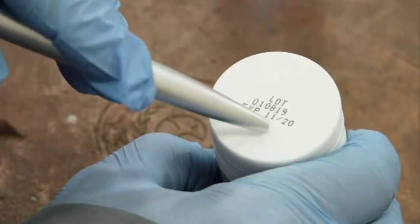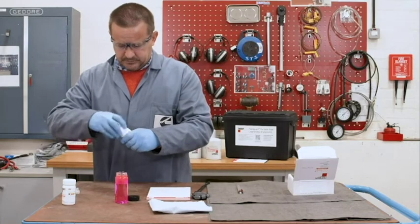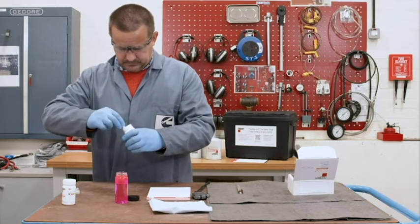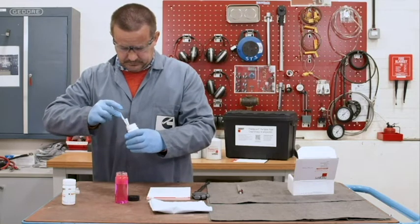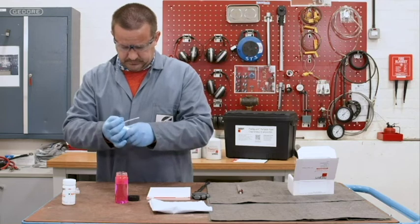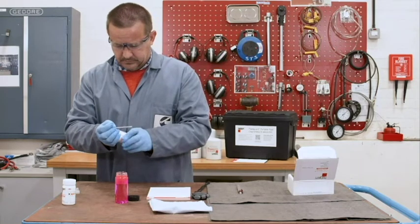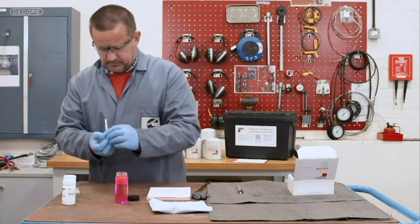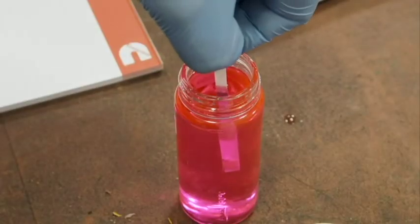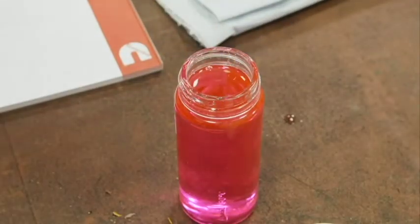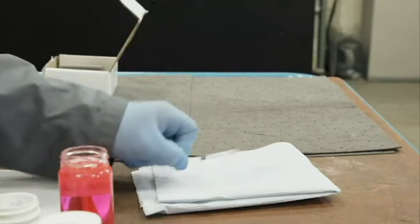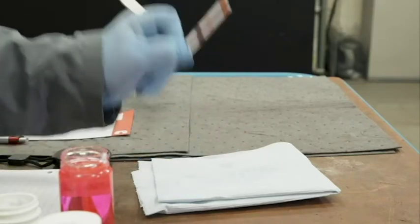First confirm the test strips are in date. Remove an individual test strip from the bottle and close the lid straight away. It's important to avoid touching any of the chemical pads as this could cause interference with the testing. Dip the test strip all the way into the coolant for about three seconds and then shake the test strip horizontally three or four times to remove any excess coolant.